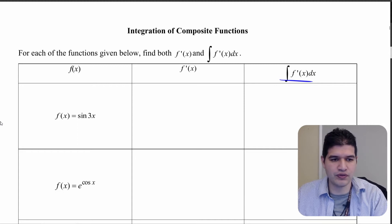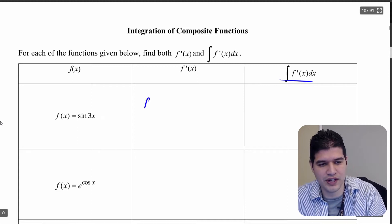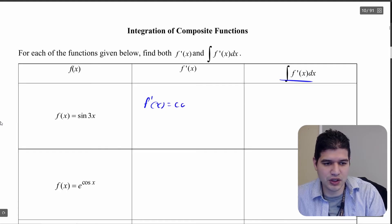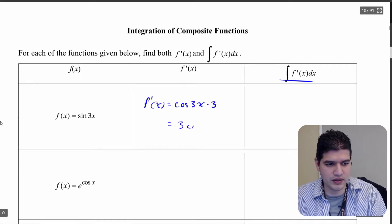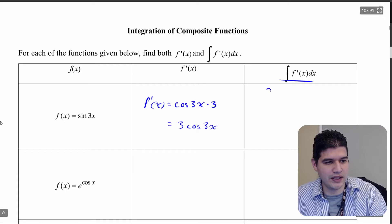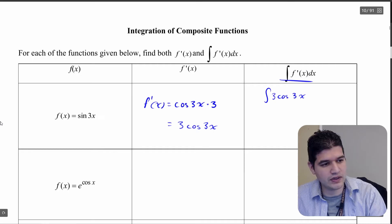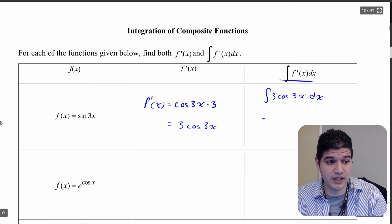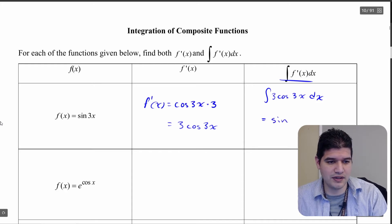So let's look at this first one. The derivative of sine of 3x — so f prime of x — well, what's the derivative of the outside? That's going to give us cosine with the inside, times 3. So this is going to be 3 cosine of 3x. So we're going to find the integral of 3 cosine of 3x dx. Since we already know this is the integral of a derivative, that's just going to be whatever the original function was — sine of 3x plus c.